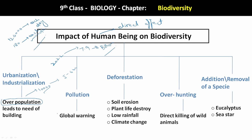Obviously with the increase in human population, industries increase, pollution increases. And with the increase of pollution, it is causing global warming and abrupt increase in temperature of the earth.